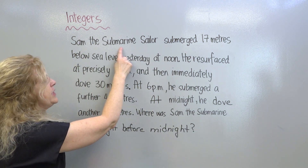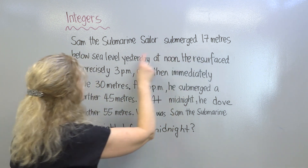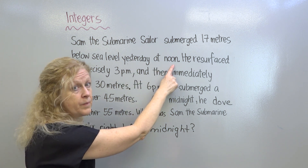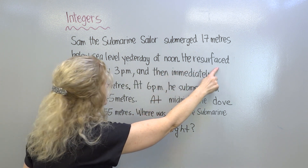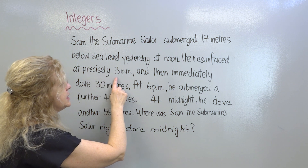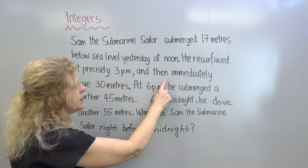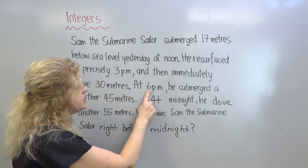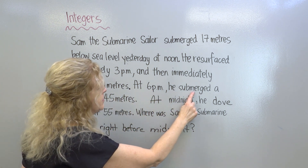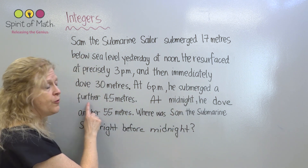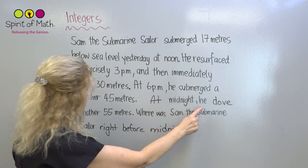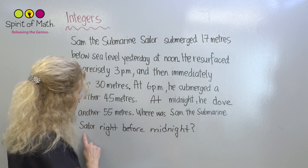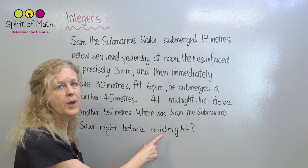Sam, the submarine sailor, submerged 17 meters below sea level yesterday at noon. He resurfaced at precisely 3 p.m., and then immediately dove 30 meters. At 6 p.m., he submerged a further 45 meters. At midnight, he dove another 55 meters. Where was Sam the submarine sailor right before midnight?